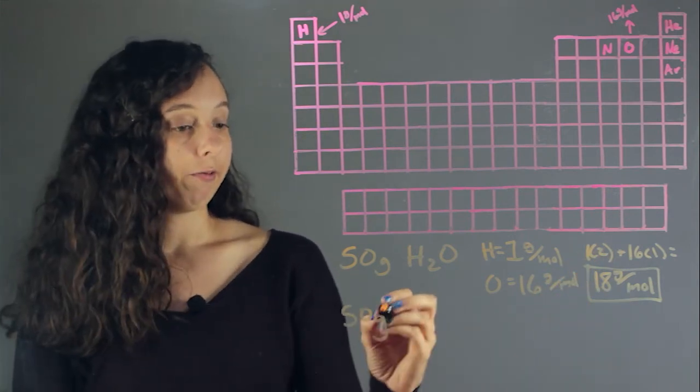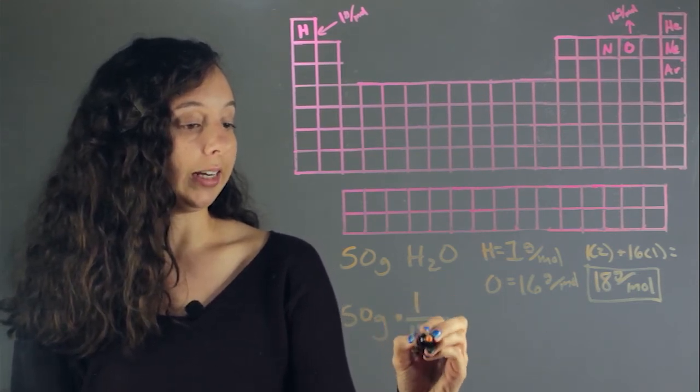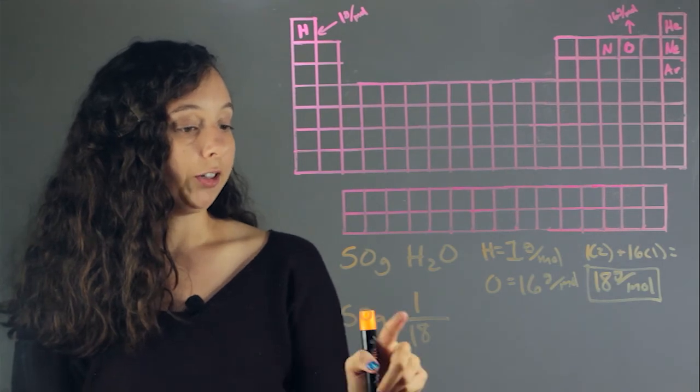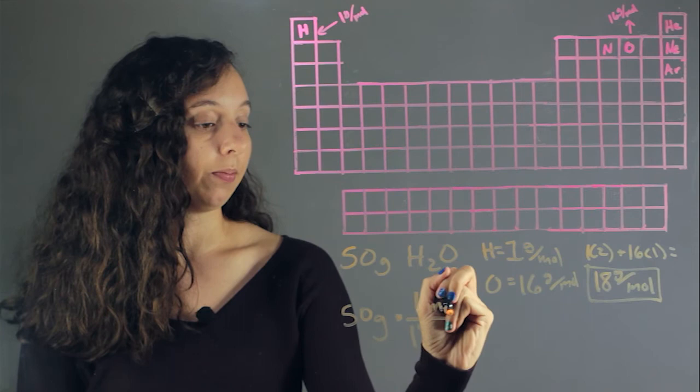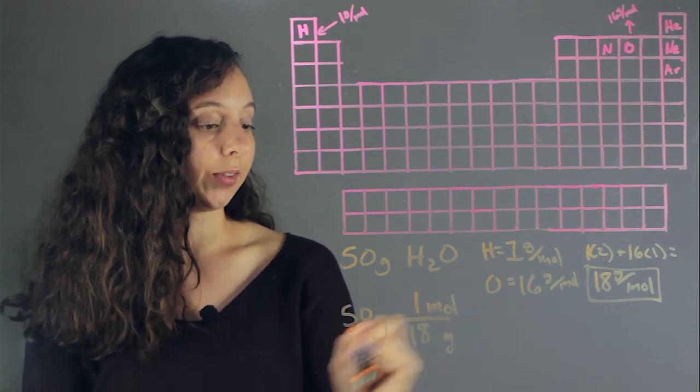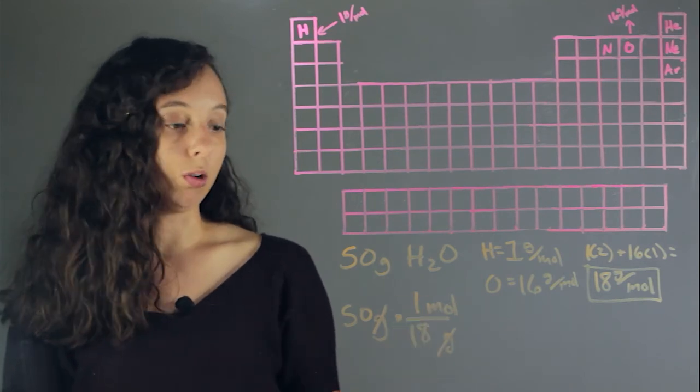Well, if we multiply by the reciprocal of 18, so now we have one on top and 18 here. If we do this, our units will also flip. So now moles on here and grams under here. Now this will let us perfectly cancel out grams, and our answer is going to be in moles.